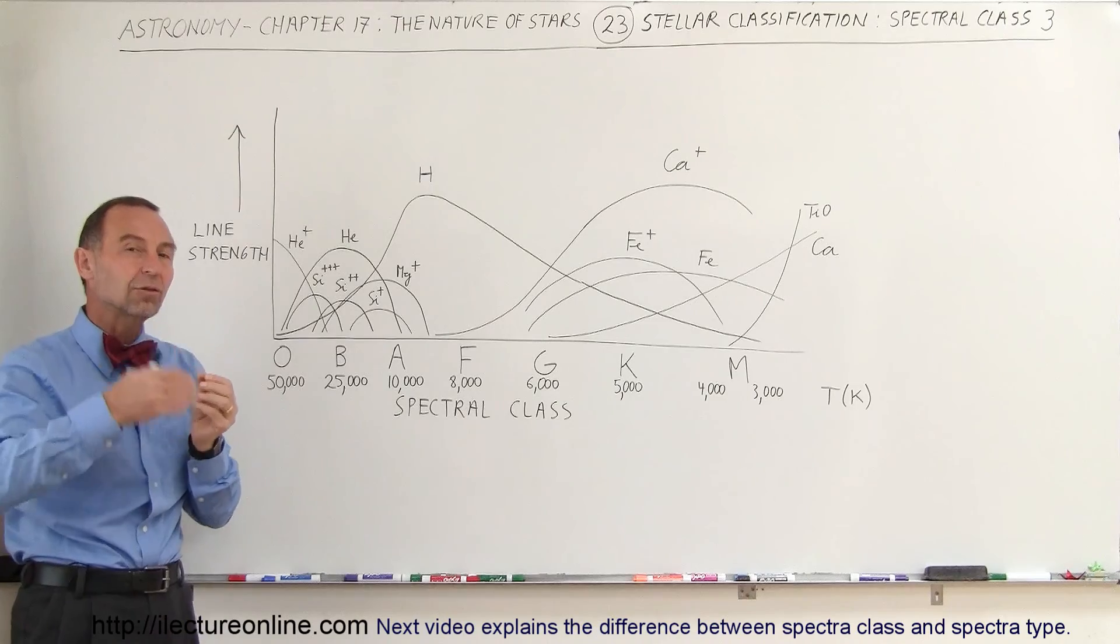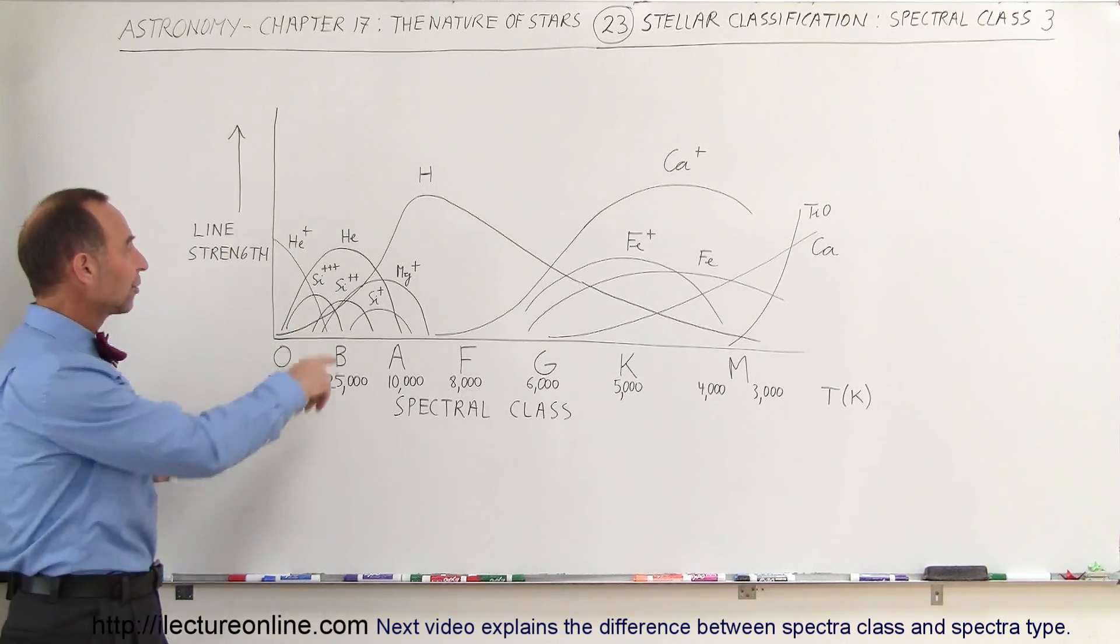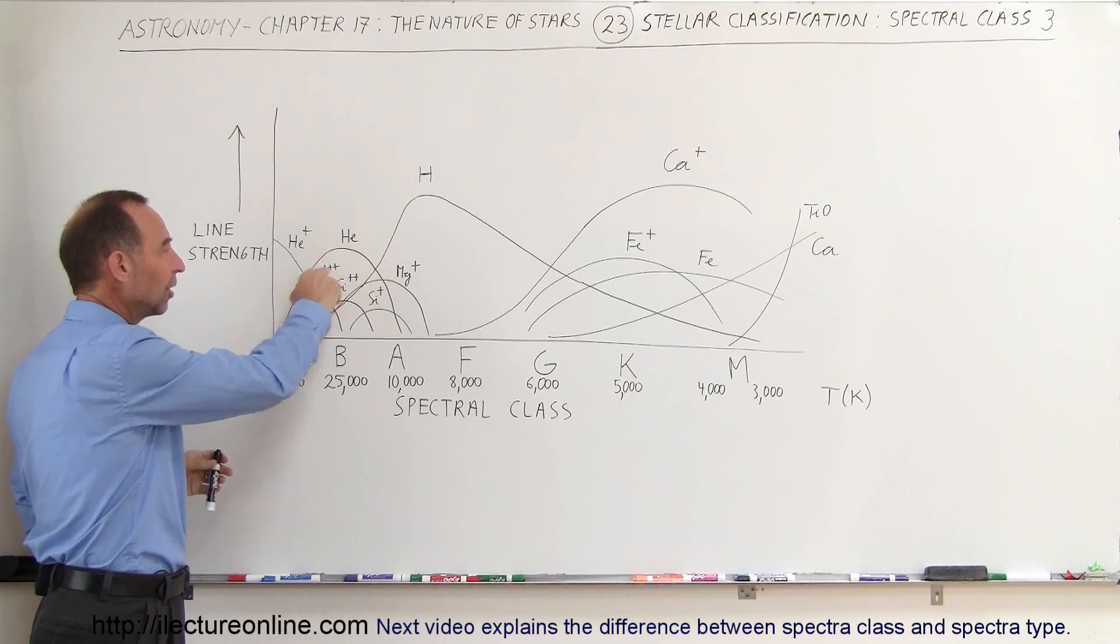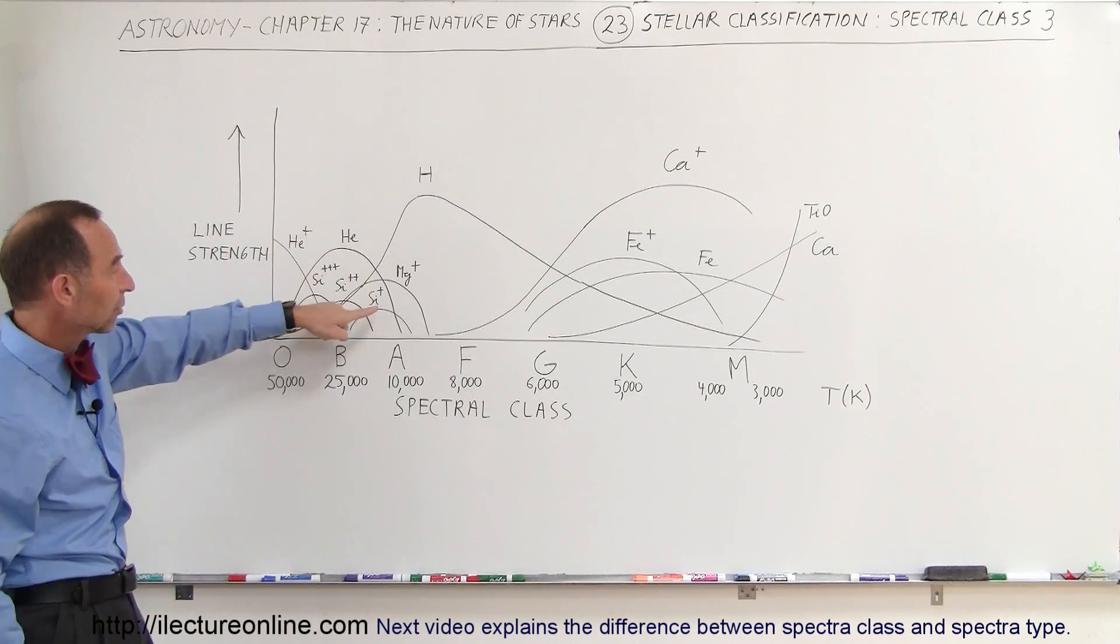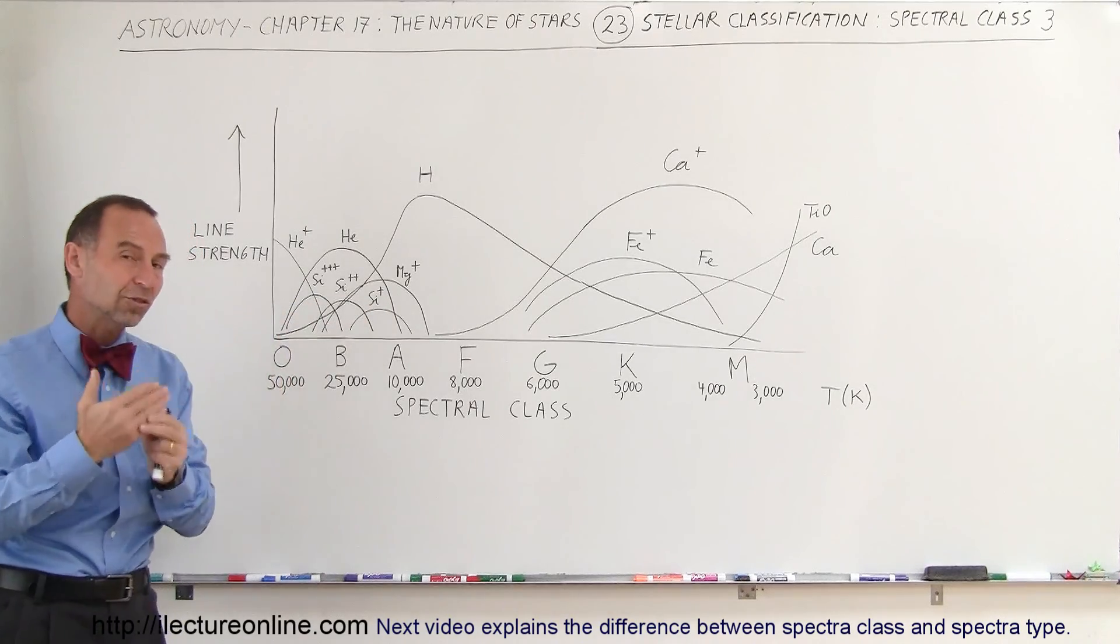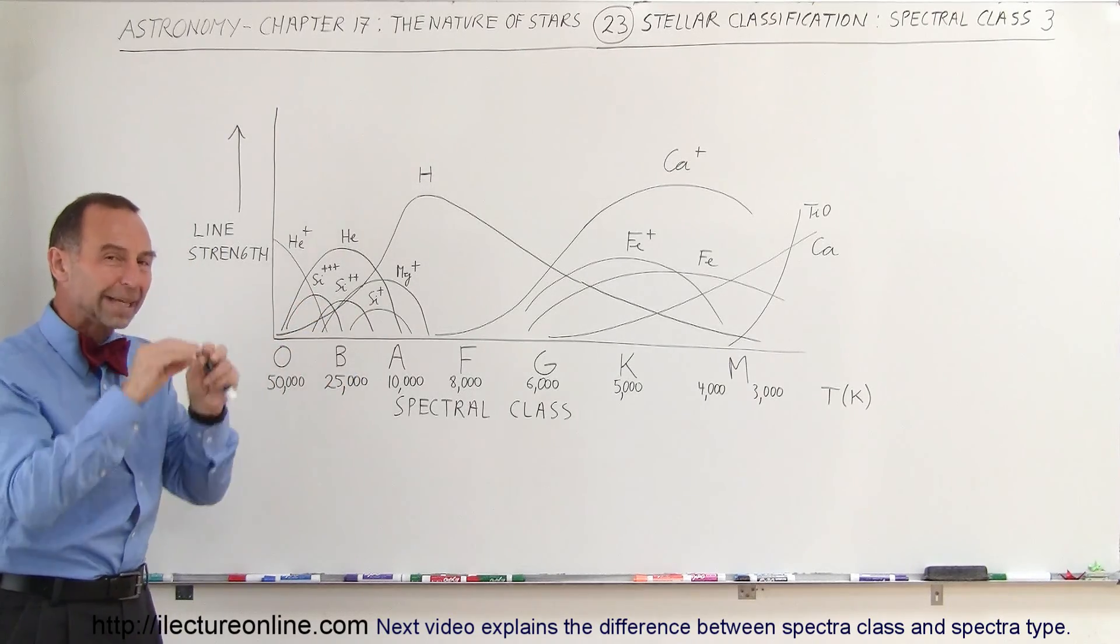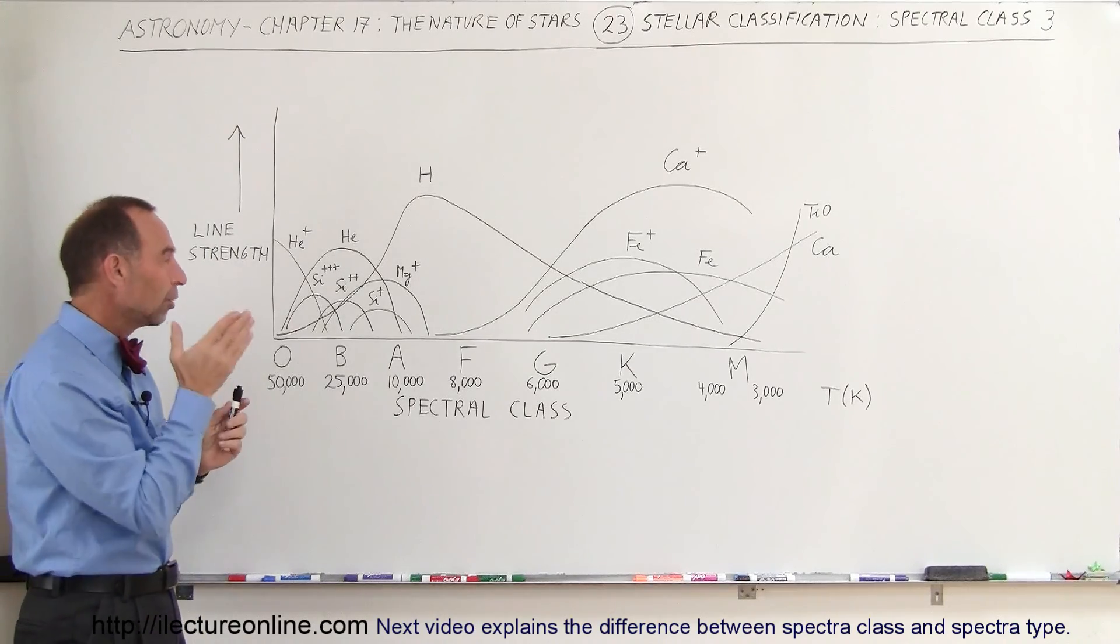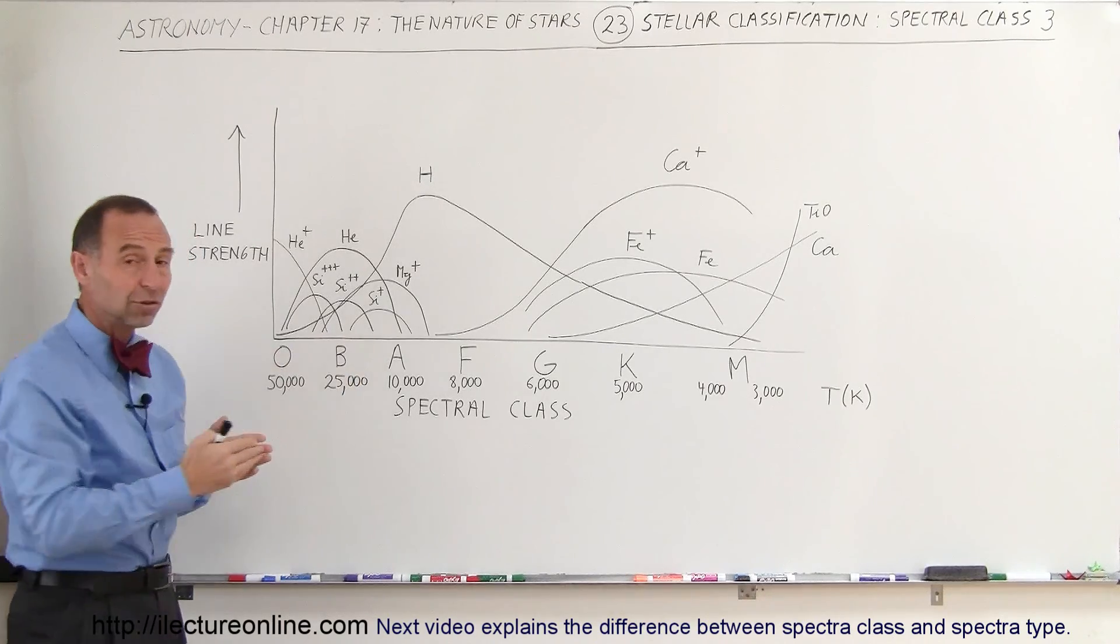For example, you can see that we have silicon, ionized silicon, but the ionization here causes silicon to lose three electrons. Here, silicon loses two electrons, and there, silicon loses one electron. We can actually differentiate between what class of stars we're looking at by noticing which of the electron jumps are occurring in the outer layers of the star, which then causes certain wavelengths to be absorbed associated with those specific electron jumps. From that, we can actually determine what class of stars we're looking at.